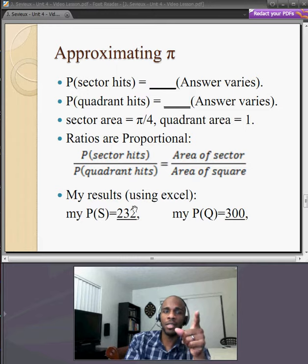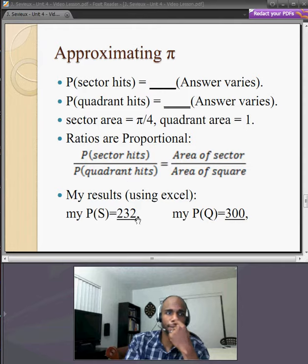Here are my results that I've obtained using Excel, and I used 300 darts, and I obtained 232 quadrant hits. So I'm going to use this in our further computations.